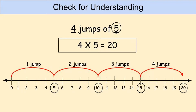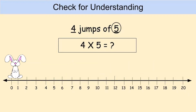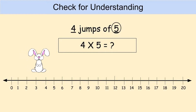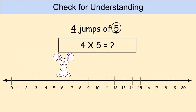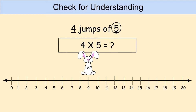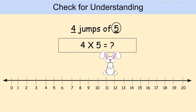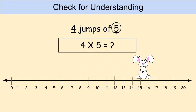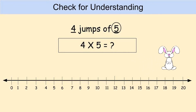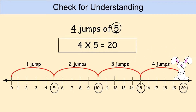Let's play back the video so we can see Snowball's jumps. Snowball starts at zero and jumps to five, then jumps again to land on ten, jumps a third time to land on fifteen, and jumps a fourth time landing on twenty. This problem may seem easier since you already know how to count by fives. Snowball jumped four times counting by five, so four times five equals twenty — Snowball is in the lead!